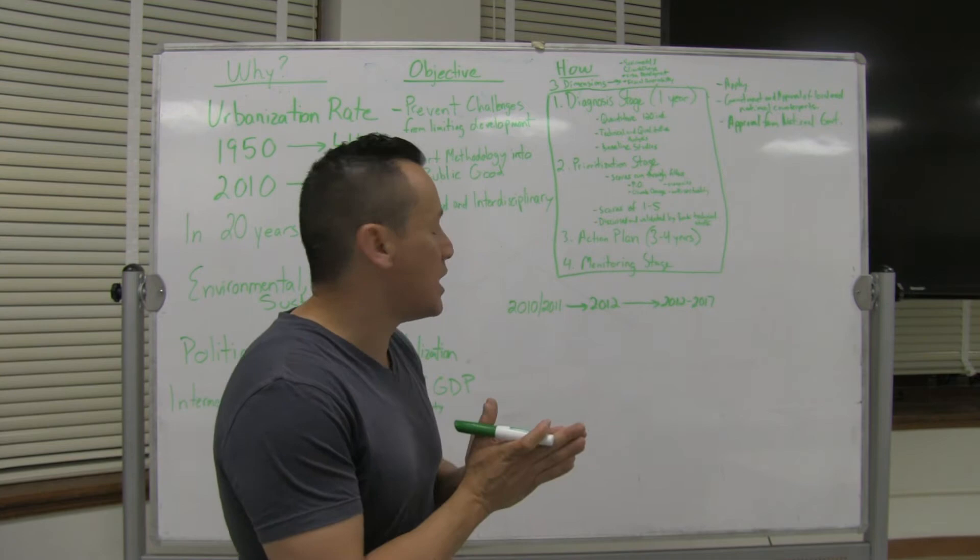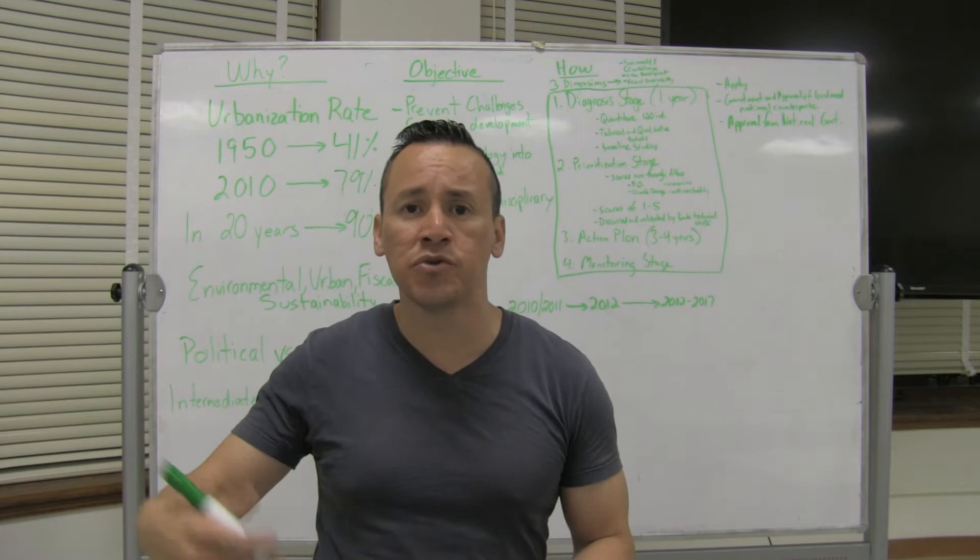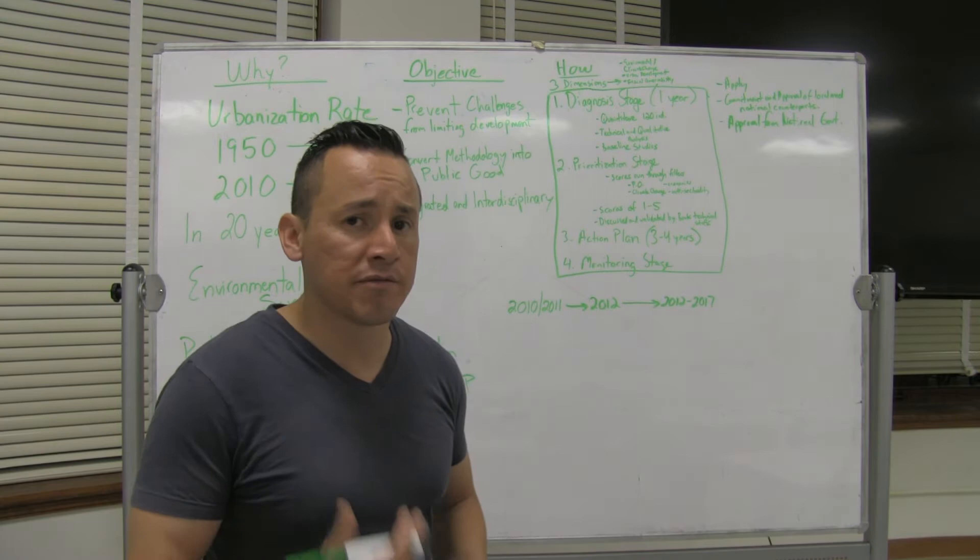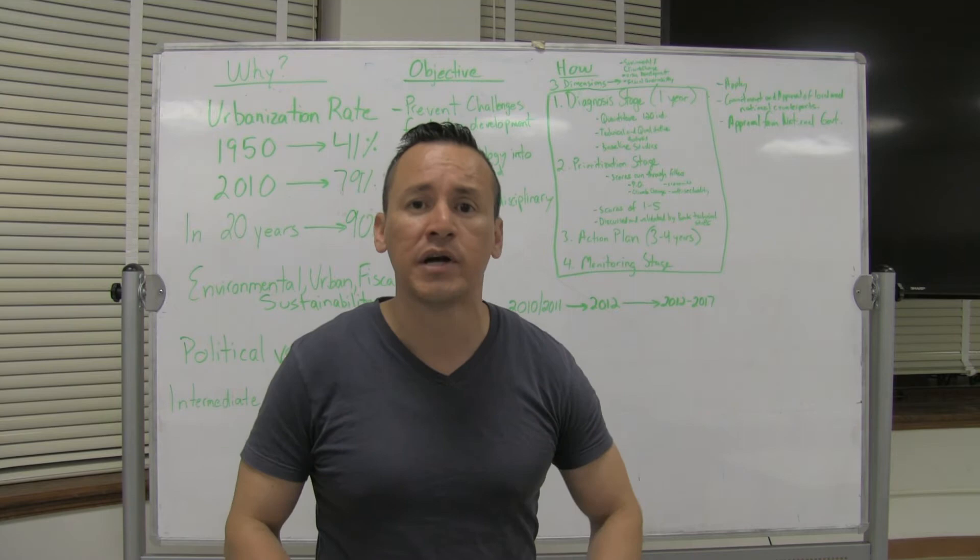Which leads us to the third stage which is the action plan stage which takes three to four years and then is followed by a monitoring stage which then follows what is implemented. It's iterative, lessons are learned along the way, and it continues monitoring the different set of indicators that are being faced.